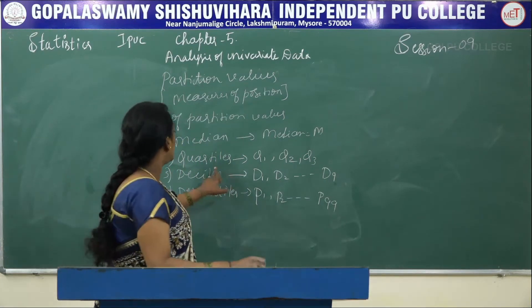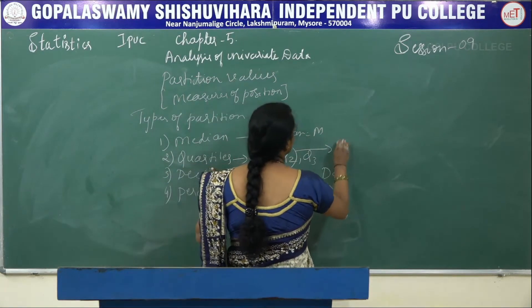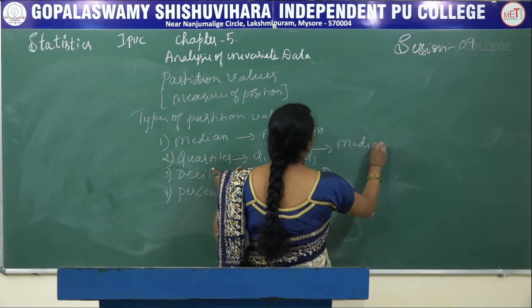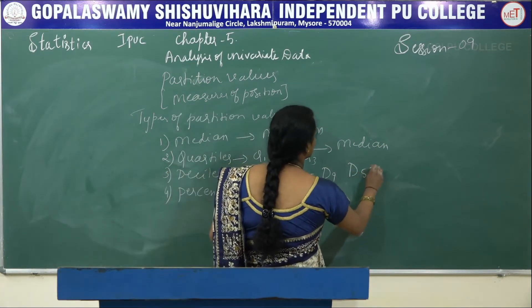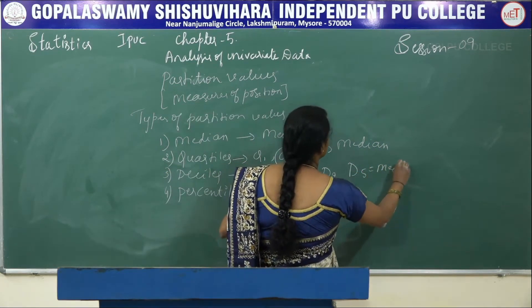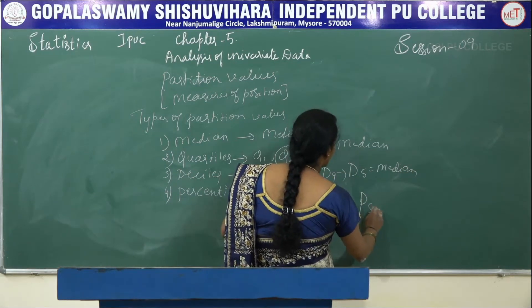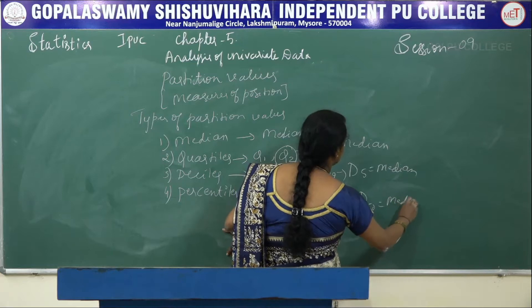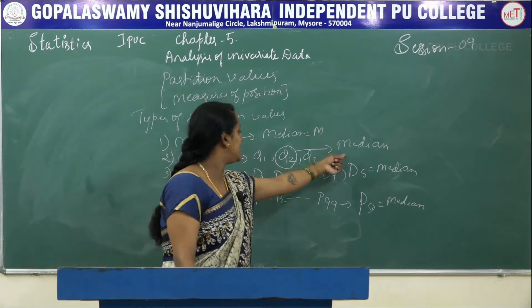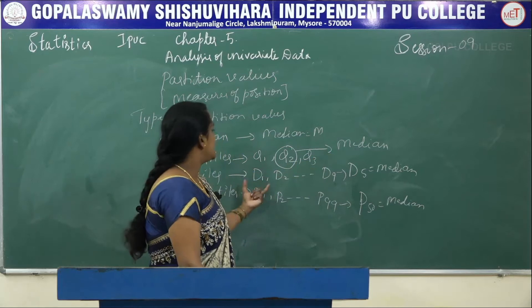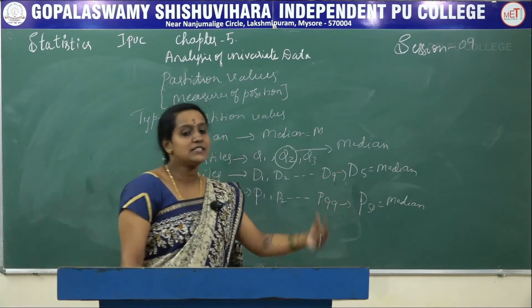In quartile, Q2 is our median. In deciles, D5 is equal to median. And in percentiles, P50 is our median.